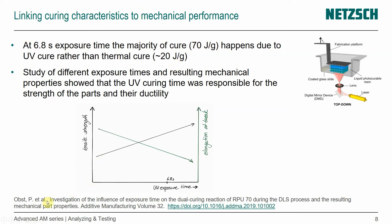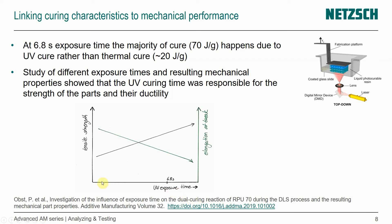And in the study published by Obst and others, they did these experiments, but they also studied the effect of different exposure times, repeated those experiments, and then also printed samples and studied the mechanical properties. Here you can see a schematic of their results — the exposure time increasing along the x-axis and the tensile strength and elongation at break on the y-axis. What they found was that the UV curing time was responsible for the strength of the parts and their ductility. At 6.8 seconds, the tensile strength is really high. If we have a shorter exposure time and more happens during the thermal cure, the material is not as strong, and the ductility — seen as elongation at break — is also reduced.